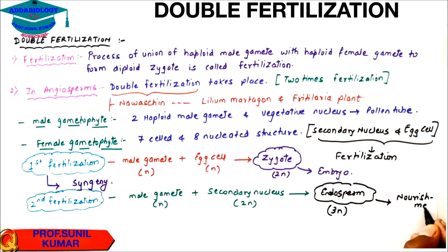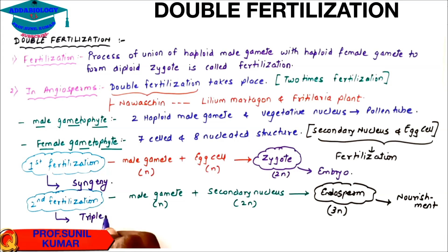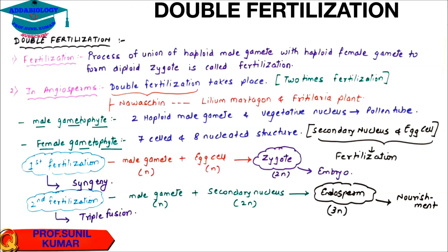Second fertilization is also called triple fusion because three nuclei fuse together.